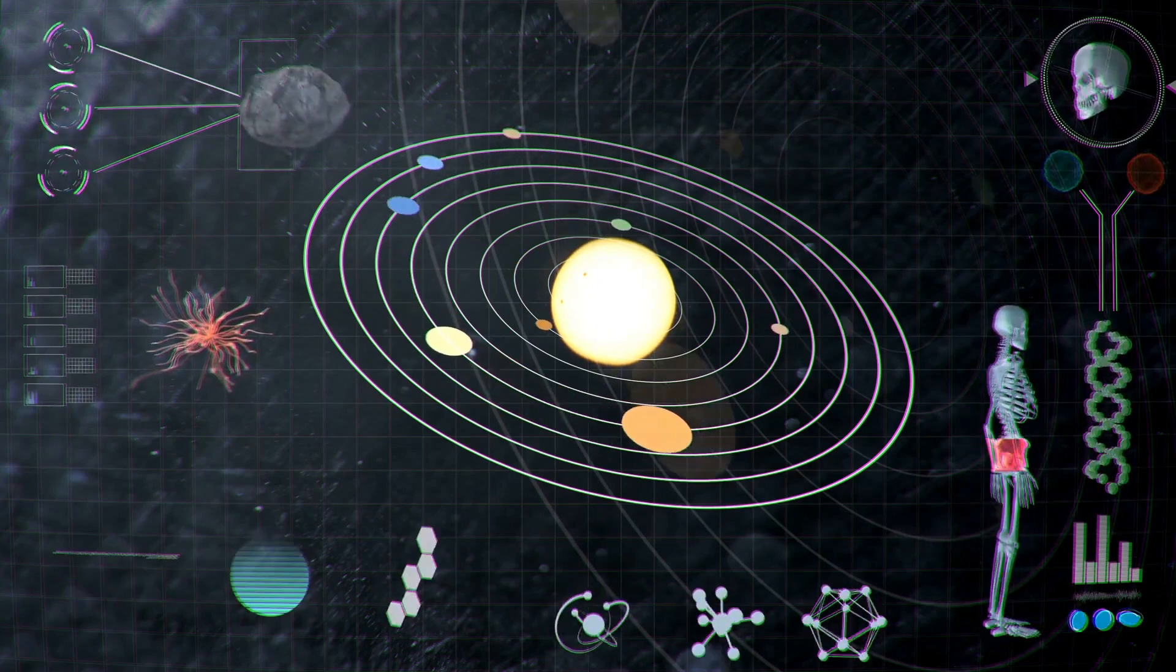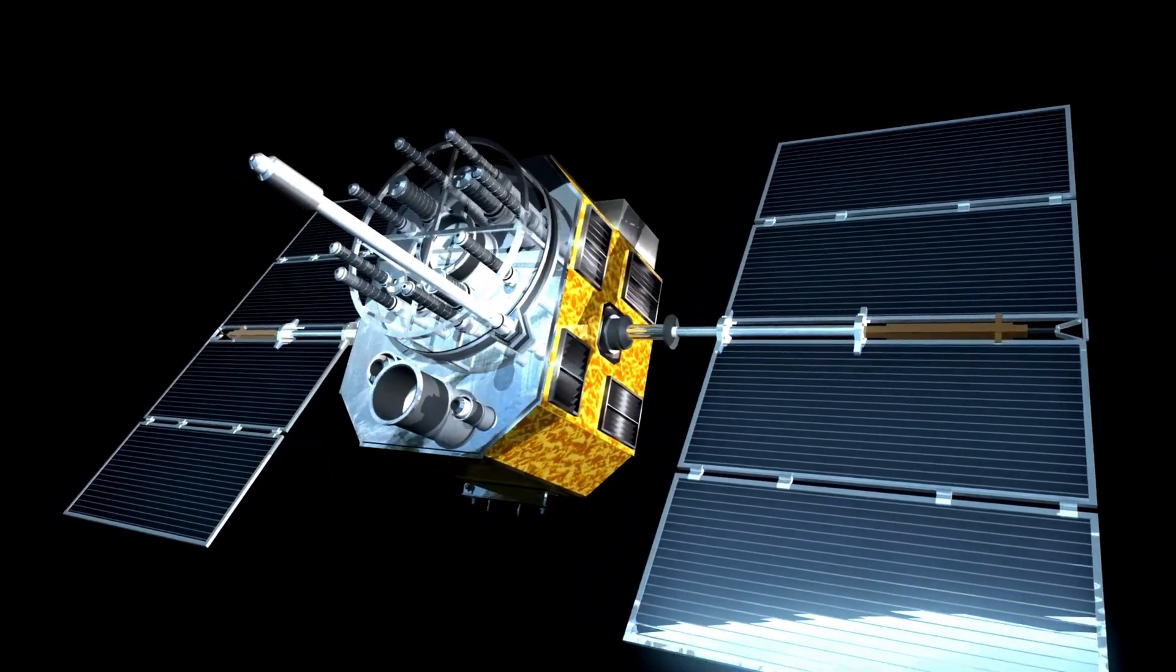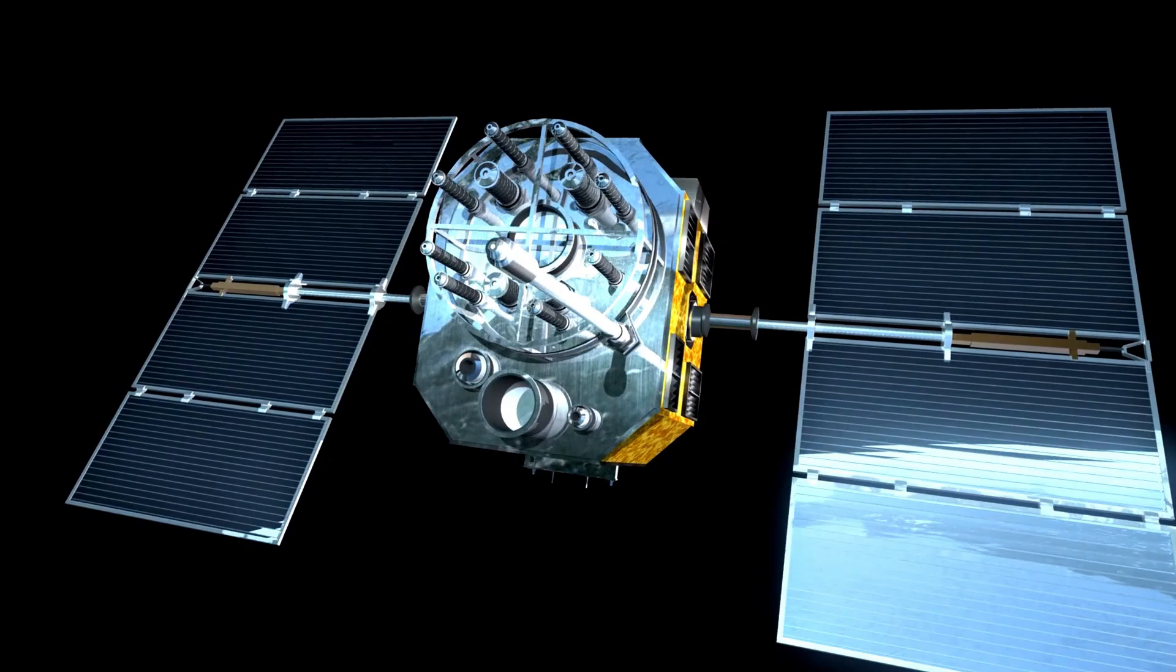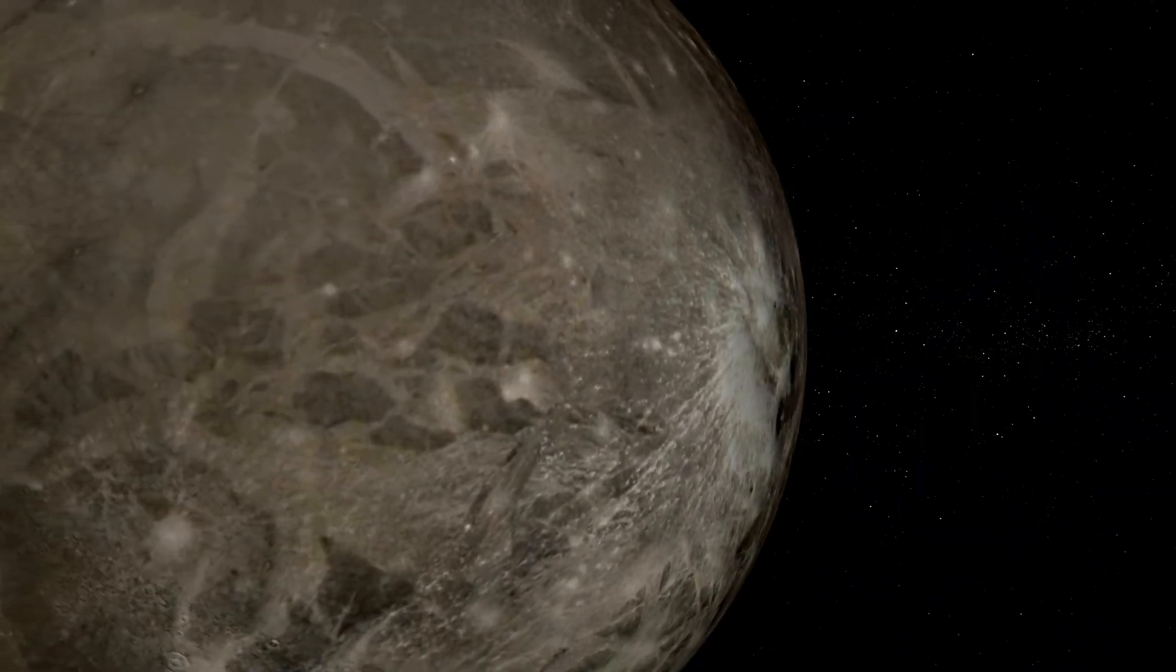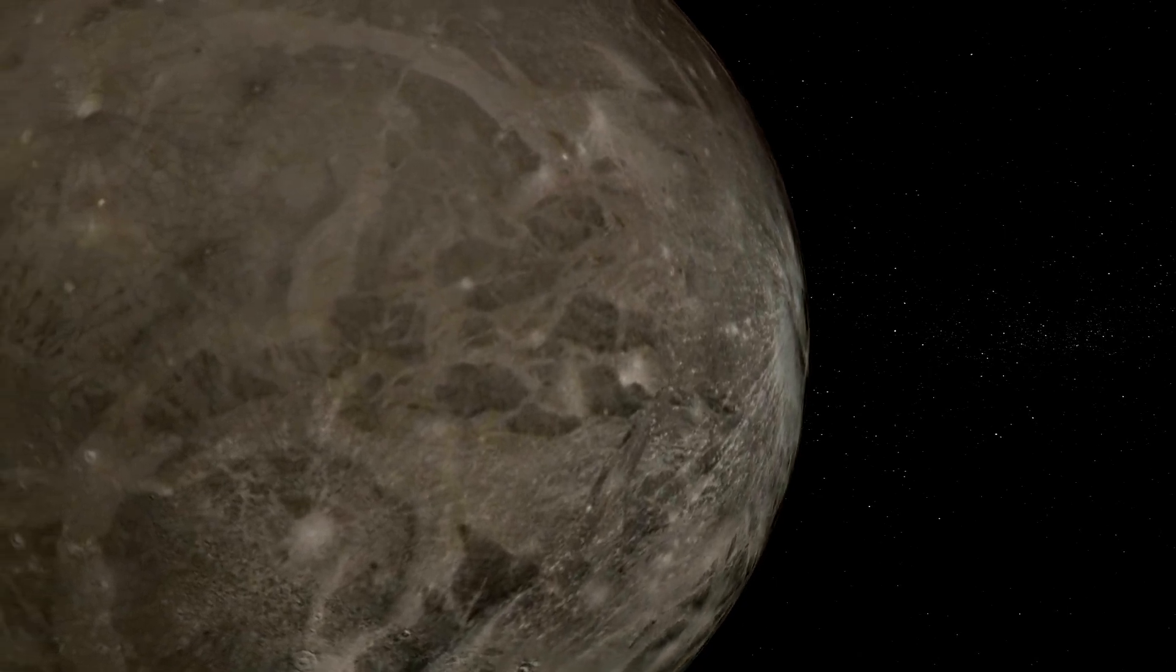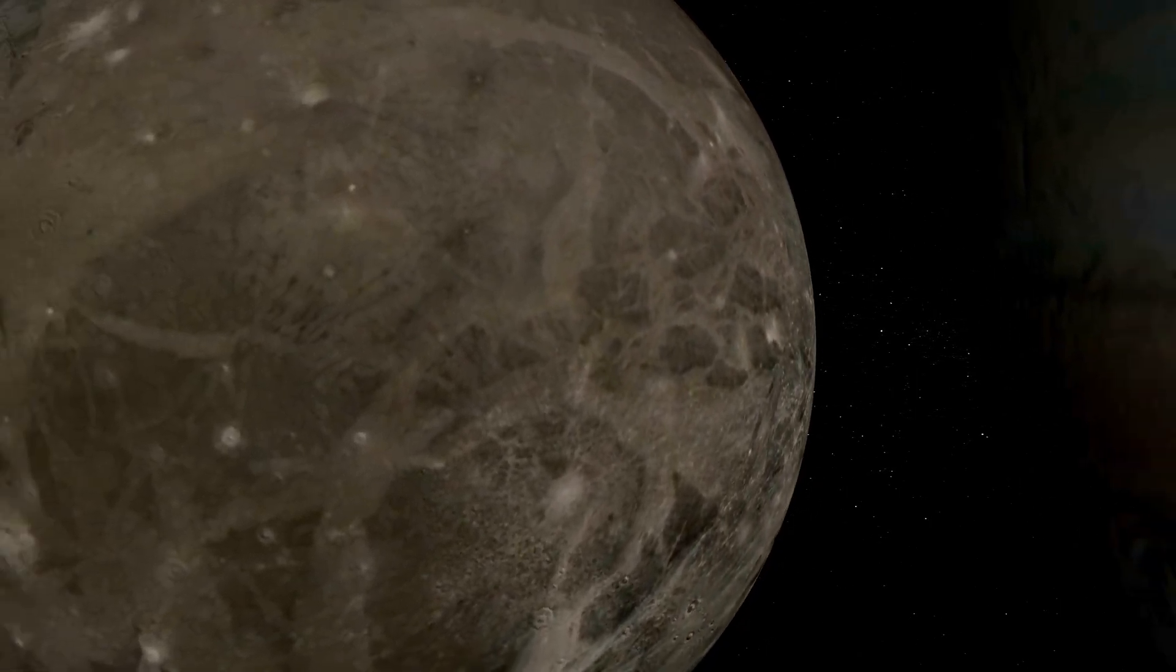We once thought the heliopause was a shield, our cosmic border, protecting us from galactic radiation. But Voyager 1 is suggesting something far more unsettling, that this edge might not be a barrier at all. It might be a threshold.